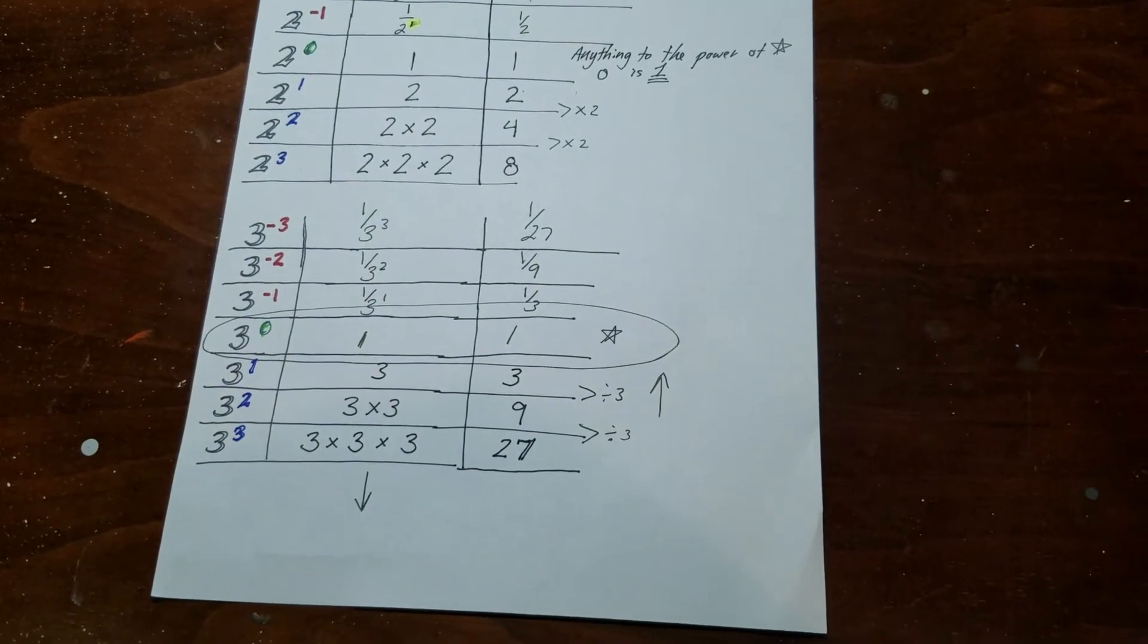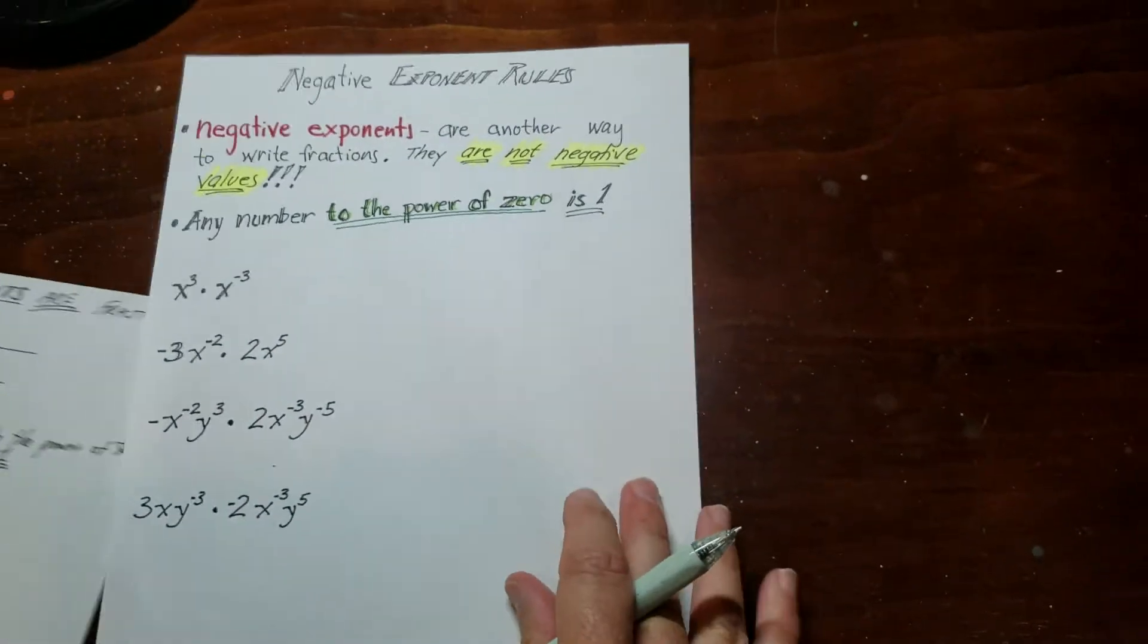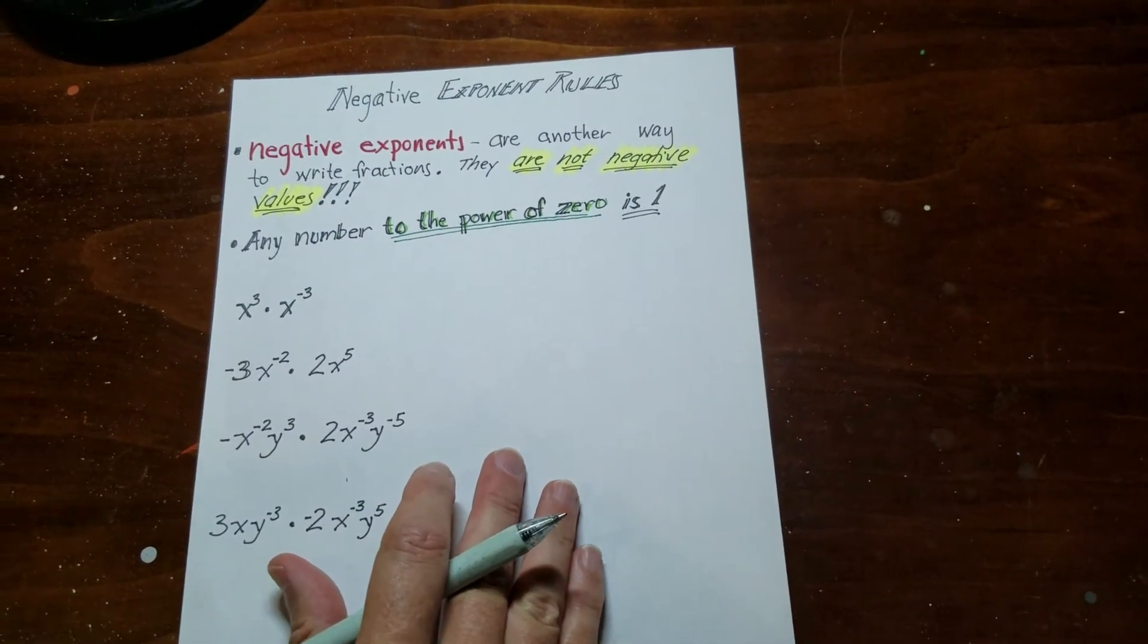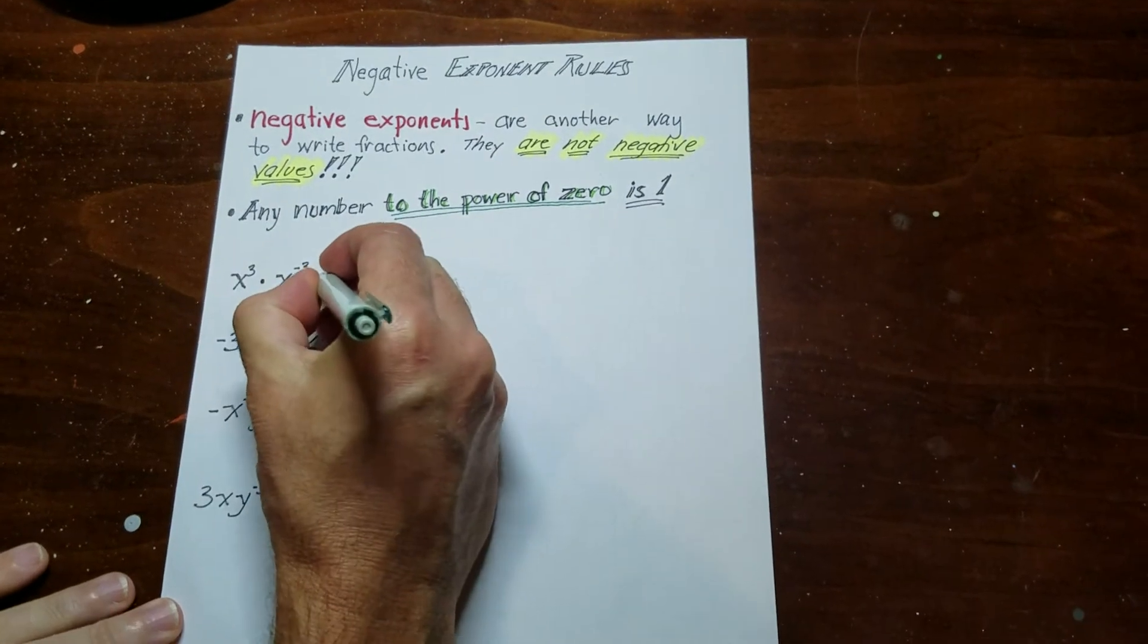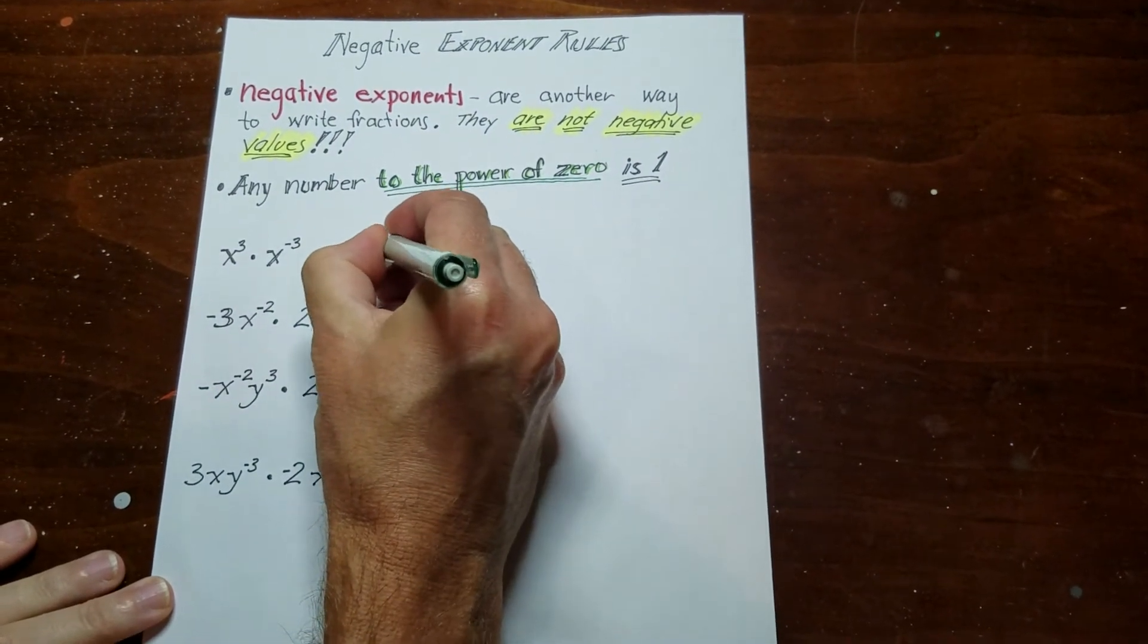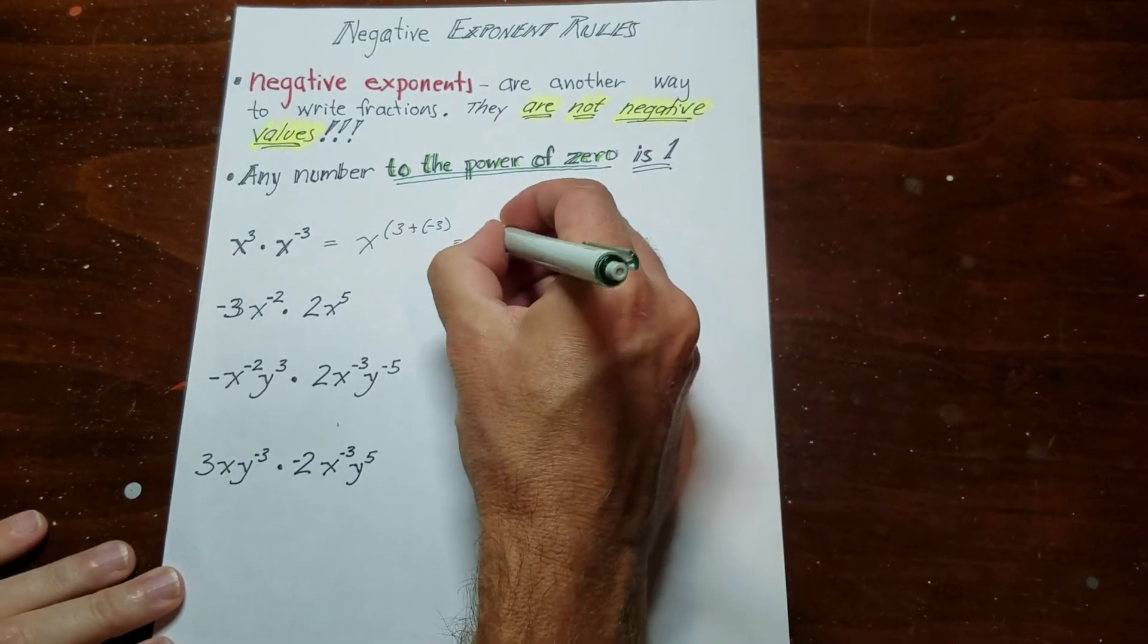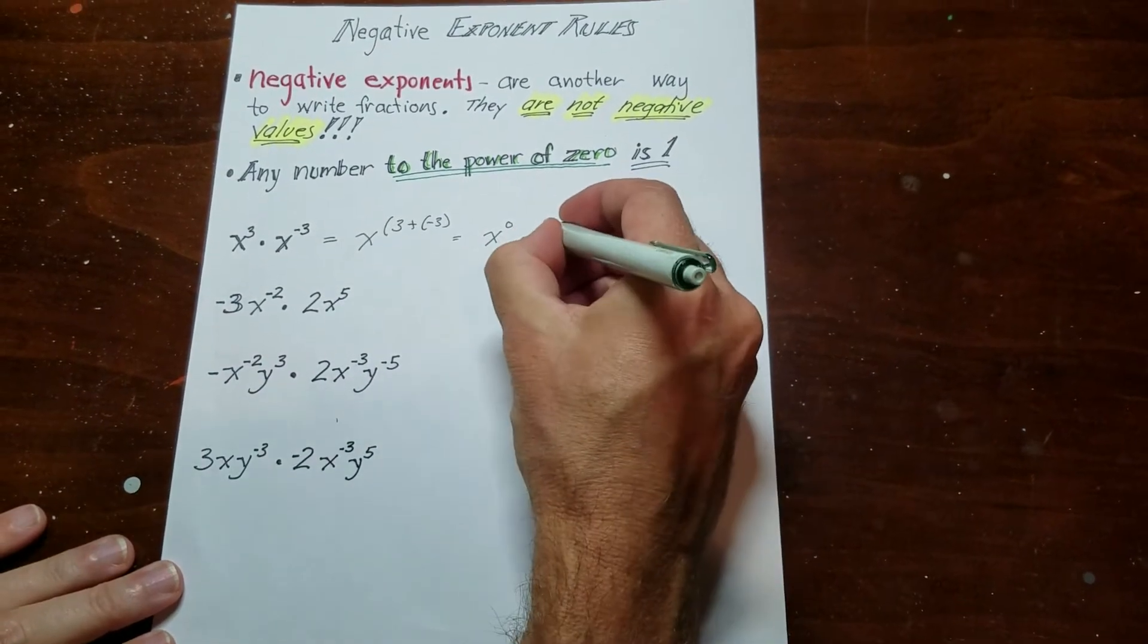So let's kind of apply this to what we did in the last video. And the rule as far as what we were doing is the same. So what this says is, remember, we add the exponents up. So these have the same base. So what I'm going to do is I'm going to do 3 plus negative 3, which is going to be x to the power of 0, which we just learned is equal to 1.